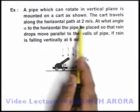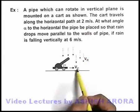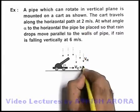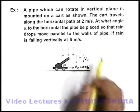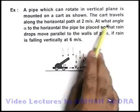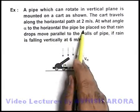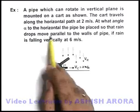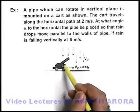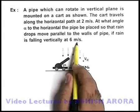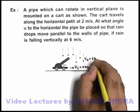The cart travels along the horizontal path at 2 meters per second. At what angle alpha to the horizontal should the pipe be placed so that rain drops move parallel to the walls of pipe, if rain is falling vertically at 6 meters per second.